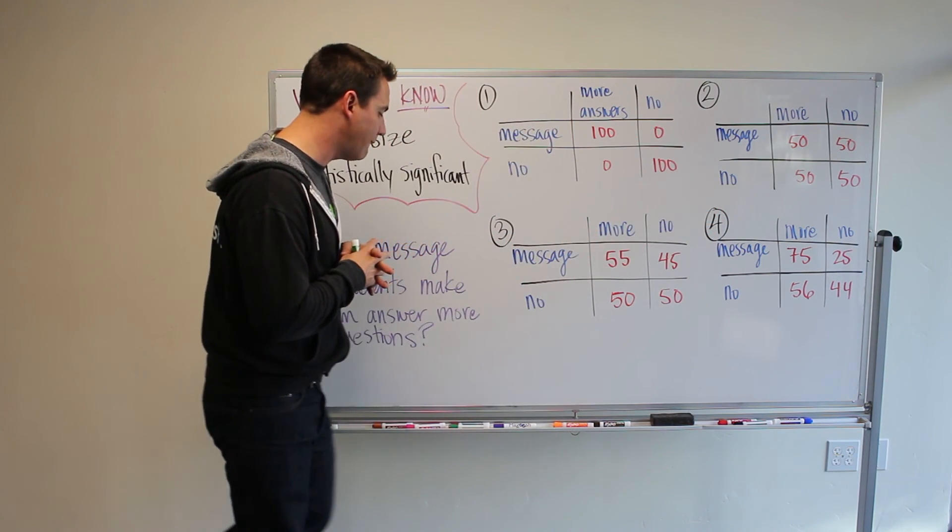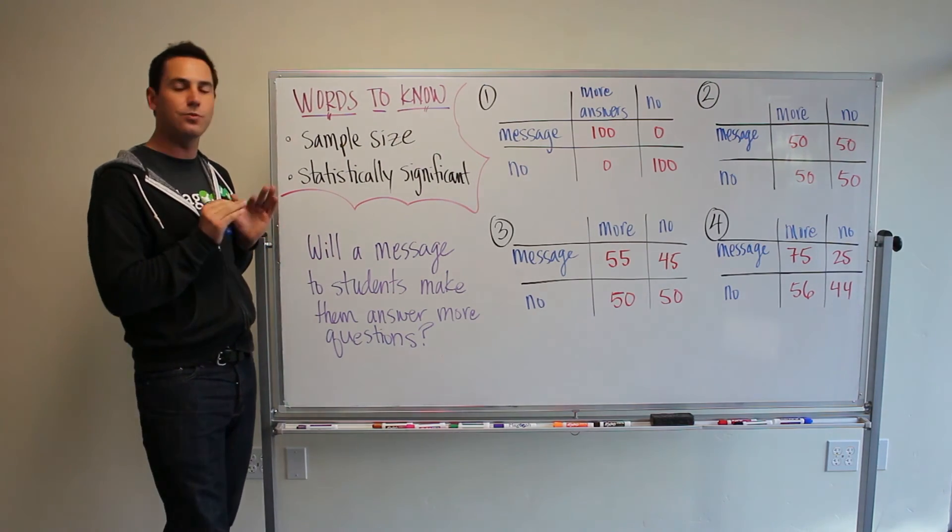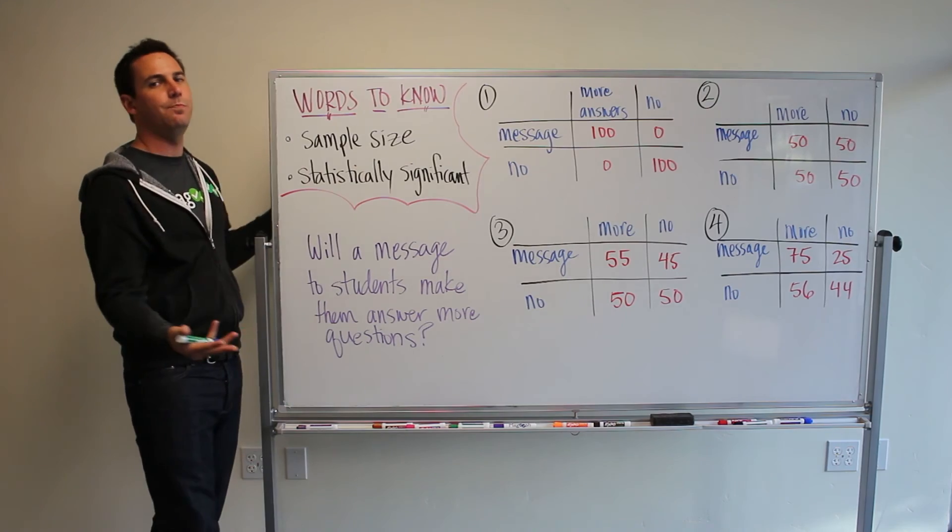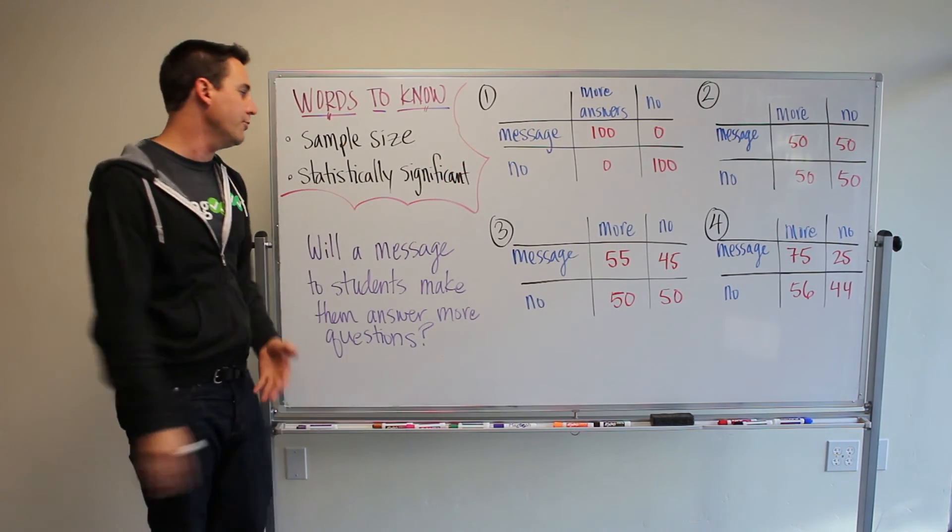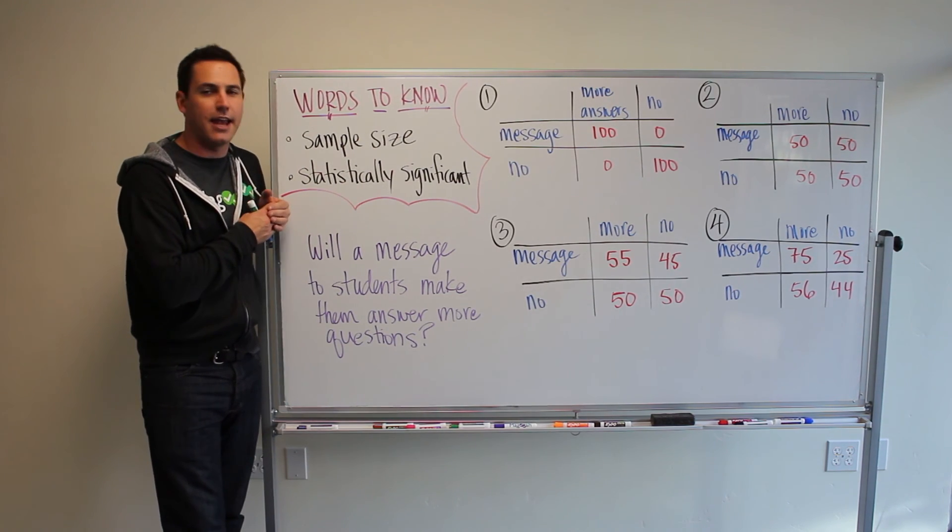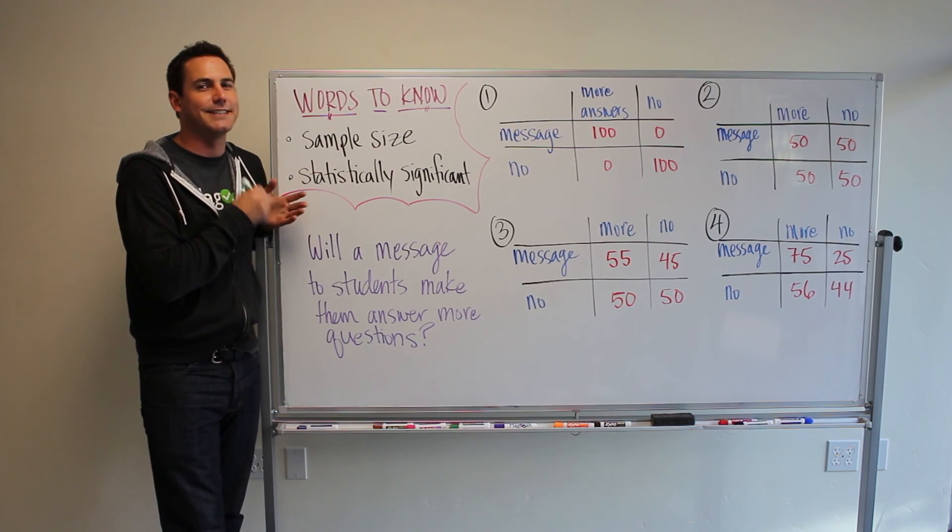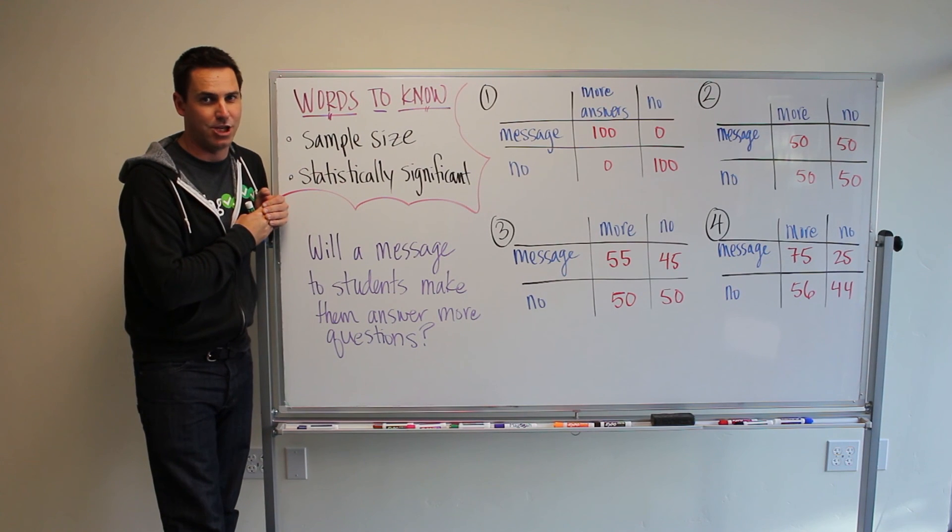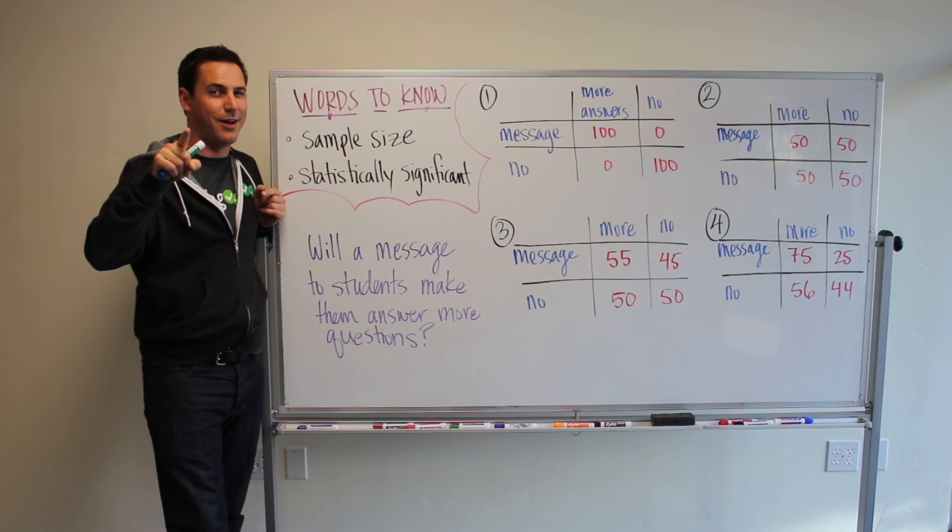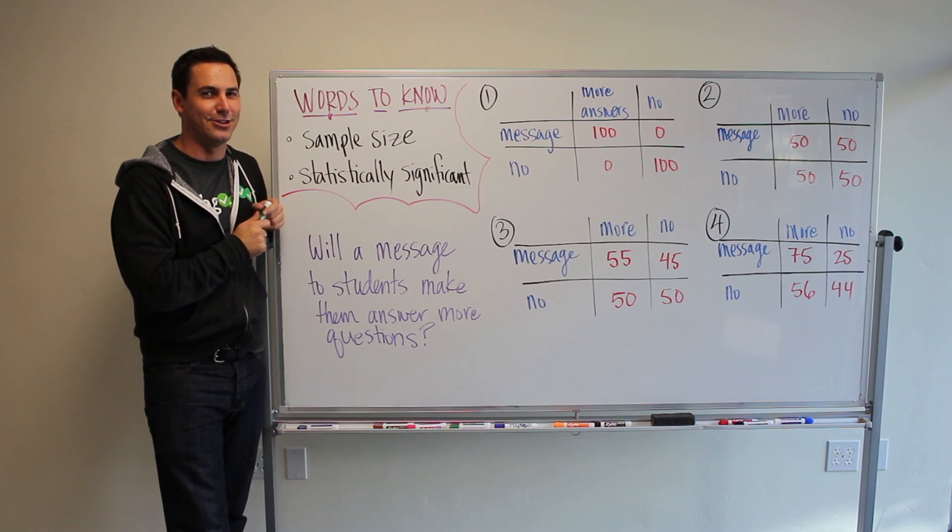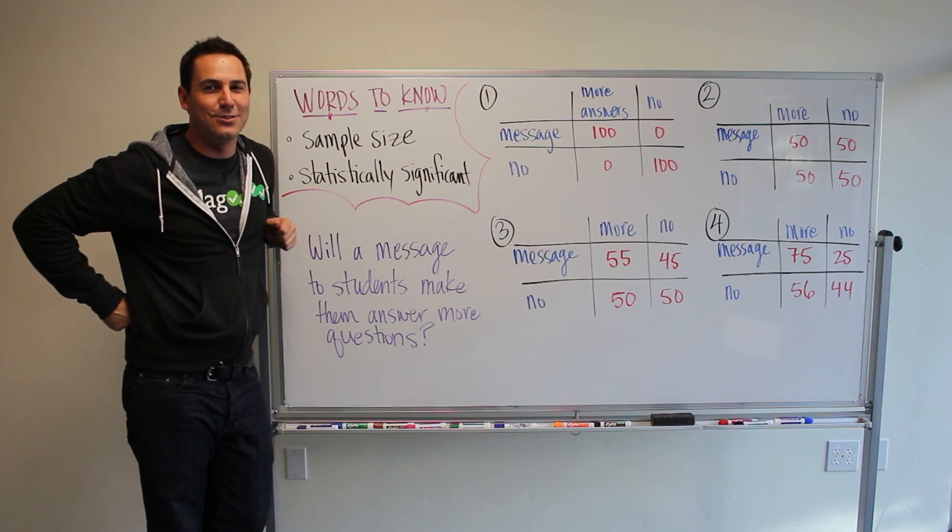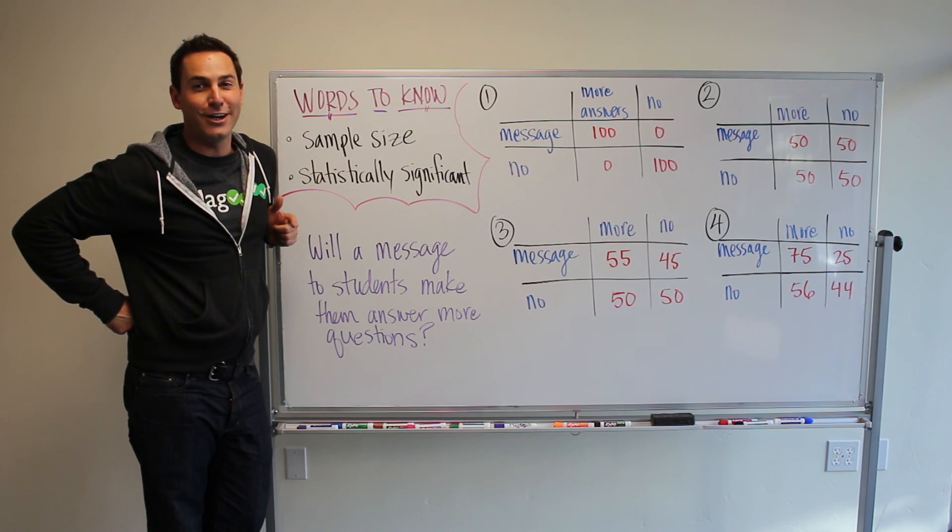So, the two phrases or terms to walk away from this video with. Sample size, that's the group that you're testing. It's always a subset of a larger group. And then statistically significant, it means that the probability that something did not happen by chance. That it did not happen by chance. So, expect to get a message from us encouraging you to answer questions. Alright, that's it. Be excellent to the universe. And I will see you next Tuesday. Enjoy Turkey Day.